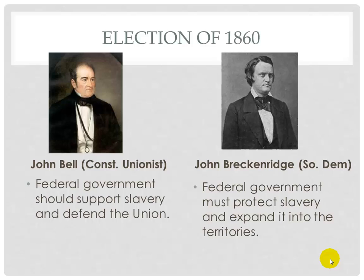John Bell is a Constitutional Unionist. The Constitutional Unionists were old-school Whigs and people from the Know-Nothing Party who don't have an explicit stance on slavery in the territories. They try to represent the spirit of sectional accommodation that led to the compromises of 1820 and 1850. In effect, the race became a separate two-party contest in each section: in the North, the real choice was between Lincoln and Douglas; in the South, the only candidates with a chance were Breckinridge and John Bell.